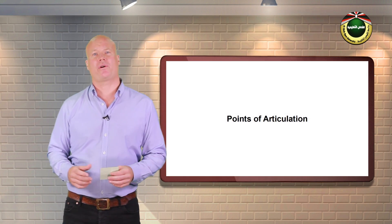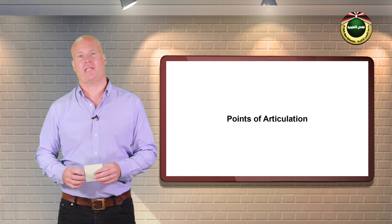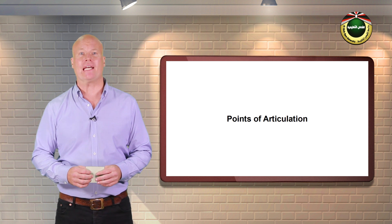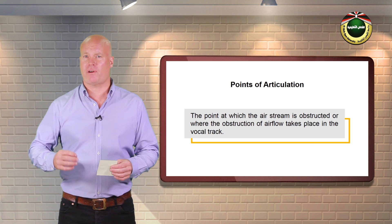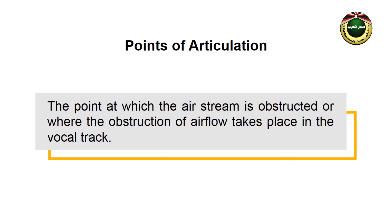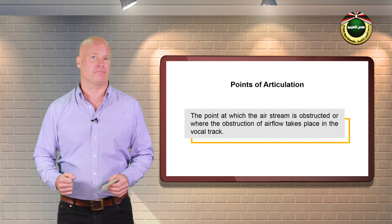Now we are going to discuss points of articulation of English consonant sounds. The point of articulation refers to the point at which the airstream is obstructed, or where the obstruction of air flow takes place in the vocal tract.